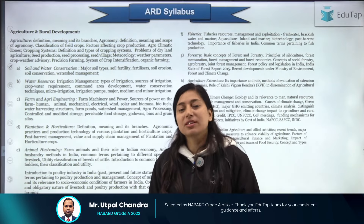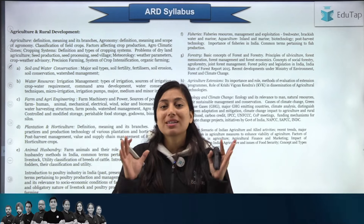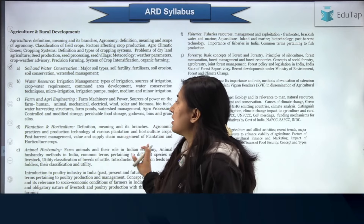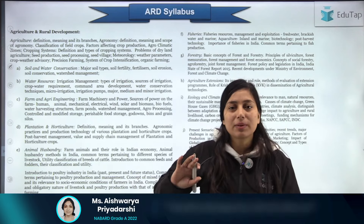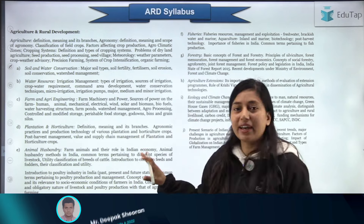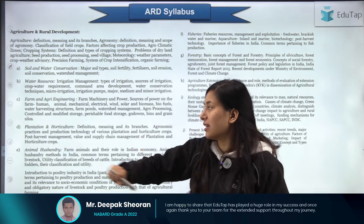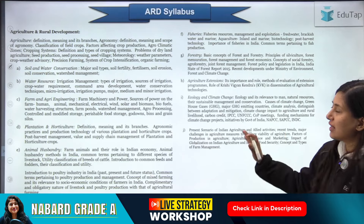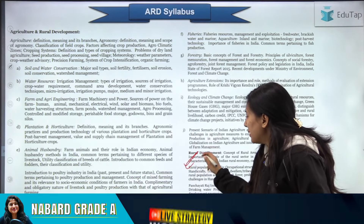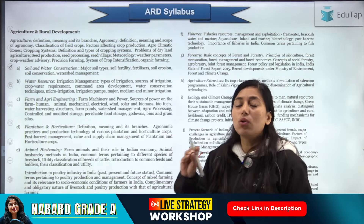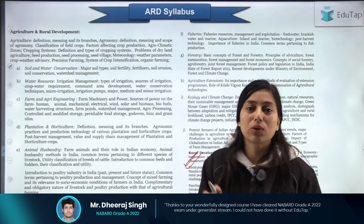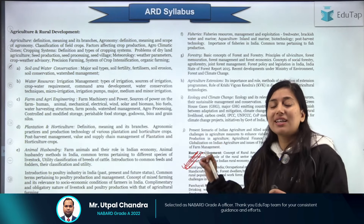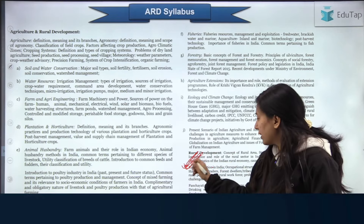First, before studying any subject from an exam point of view, it is very important to know its syllabus. Go to the notification and read the syllabus. Just read the topics given — for example, soil and water conservation, water resources, plantation and horticulture — just get a rough idea. Apart from this static syllabus given by NABARD, rural development is also included, where most questions come from current affairs related to rural development schemes. So the static weightage is lower in rural development, but you still need to cover the schemes related to agriculture and rural development.